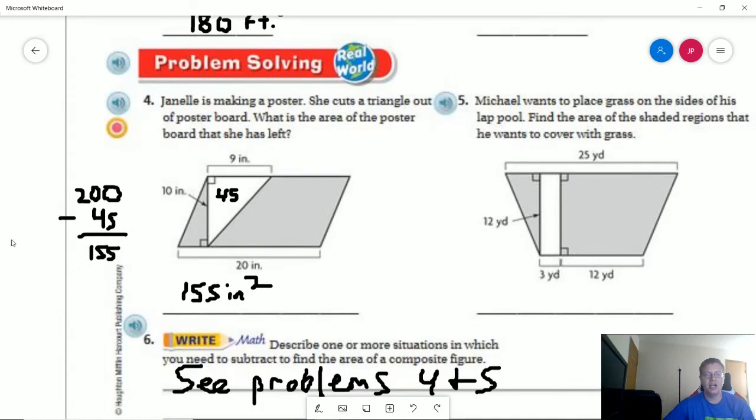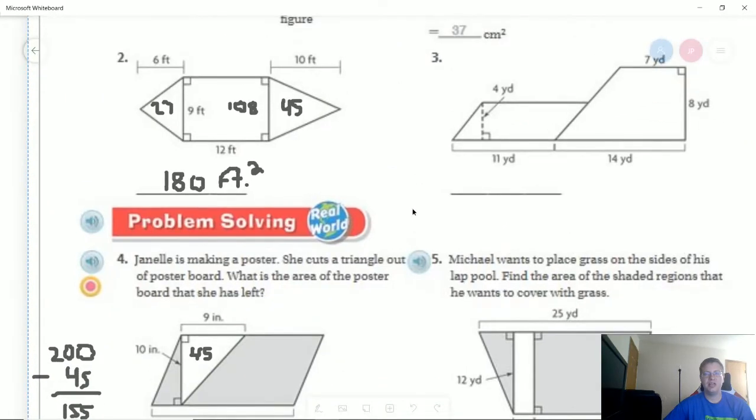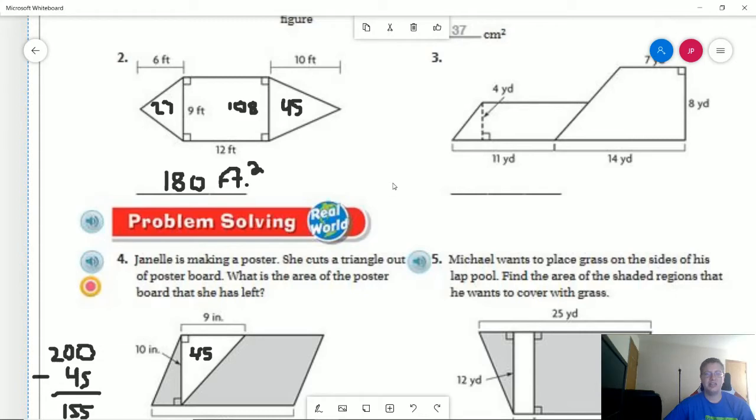Number four. My area for the first one would be 200 for our parallelogram, and then that would give us 200 minus whatever we come up with for this, and we actually have the same triangle that we had on this portion here.